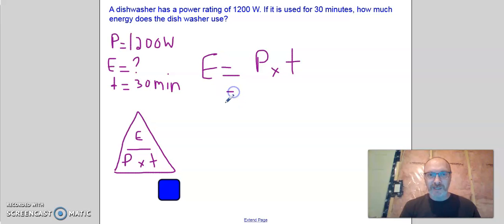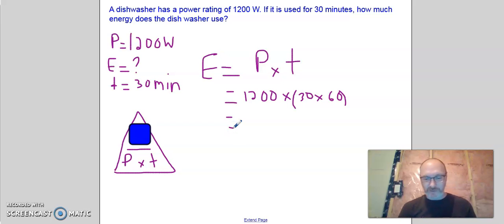So energy is P times T. And the way that we figure that out is, again, we cover up energy. And what's left over in the triangle is P times T. All we have to do now is substitute. So we have 1,200. And we're multiplying that by 30 minutes. Which we have to convert to seconds. And we do that by multiplying by 60, since there's 60 seconds in a minute. When we plug those numbers into our calculator, we've got 1,200 times 30 times 60. And that gives me 2,160,000 joules.